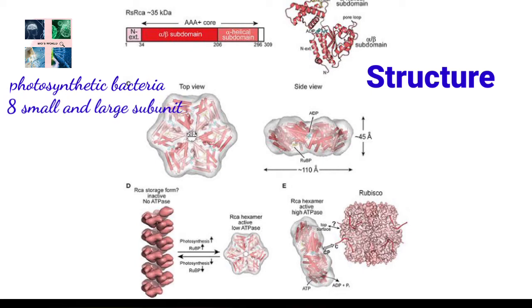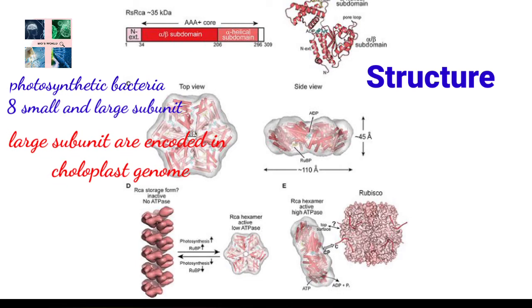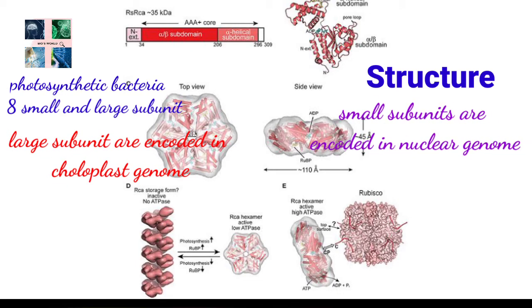Large subunits are encoded by the chloroplast genome, whereas smaller subunits are encoded by the nuclear genome. It makes up about 50% of the soluble protein in the chloroplast, and is also said to be the most abundant protein on Earth.